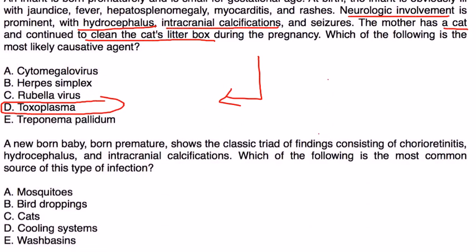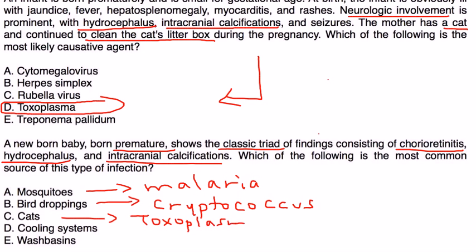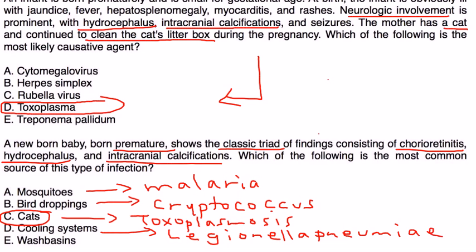Clinical vignette two: A newborn baby, born premature, shows the classic triad of chorioretinitis, hydrocephalus, and intracranial calcifications. As you may know, mosquitoes cause malaria; bird droppings can cause cryptococcus neoformans, which can cause meningitis; cats can cause toxoplasmosis — which is the correct answer here; cooling systems are associated with Legionella pneumonia; and wash basins are known to be associated with Pseudomonas aeruginosa. For this question, the answer is choice C, which is cats.